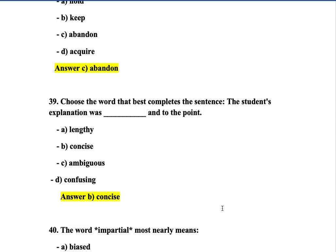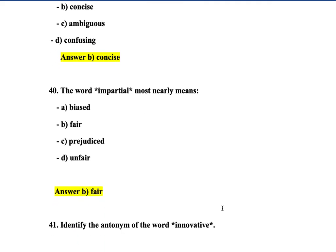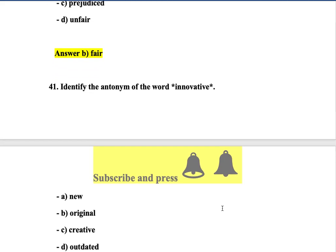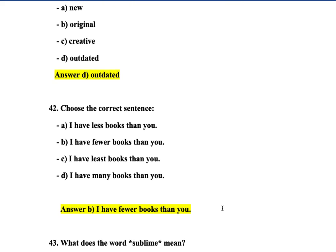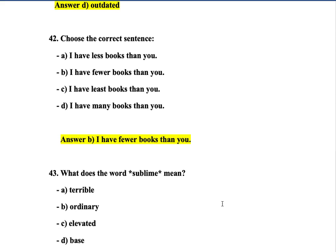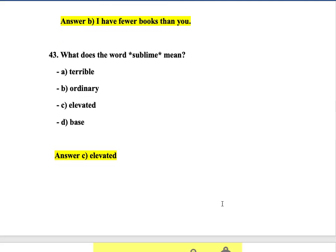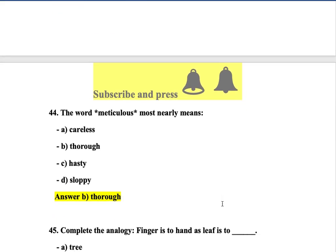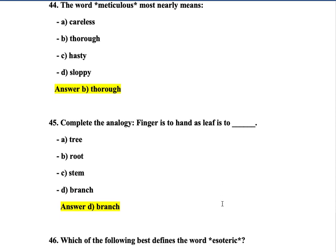Question 41: Choose the word that best completes the sentence: 'The student's explanation was concise and to the point' — option B. Question 42: The word 'impartial' most nearly means fair. Identify the antonym of 'innovative' — outdated. Question 44: Choose the correct sentence — 'I have fewer books than you' — option B.